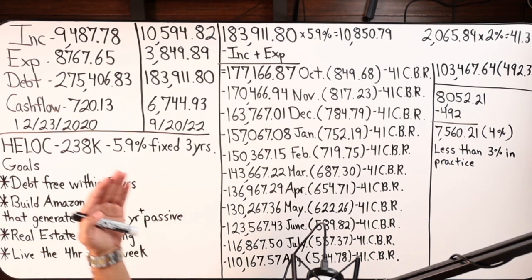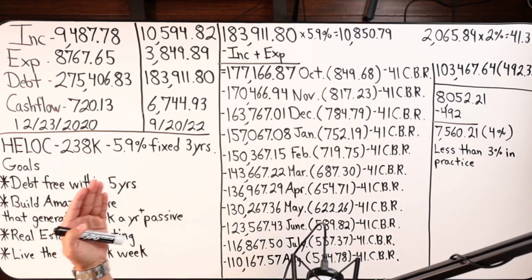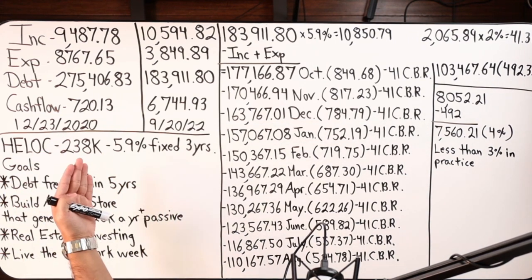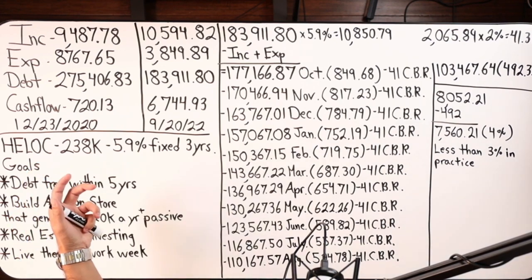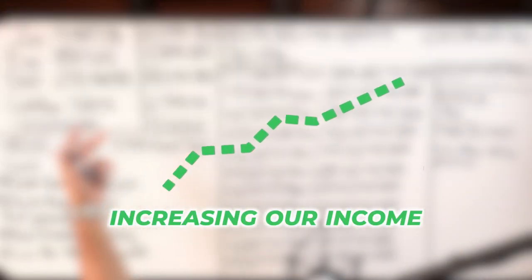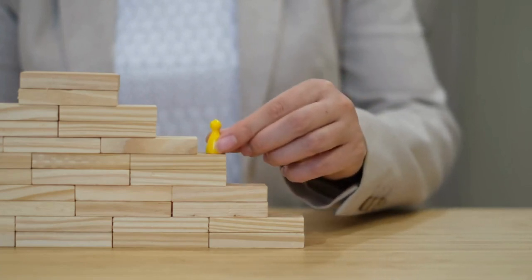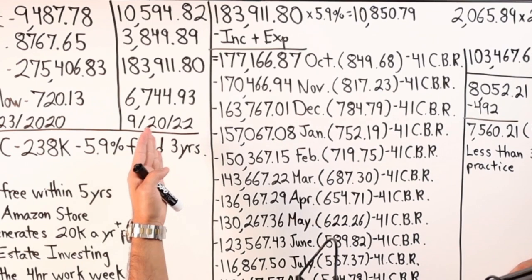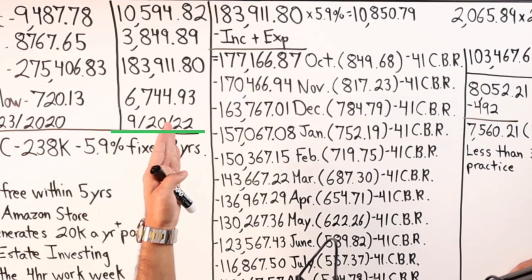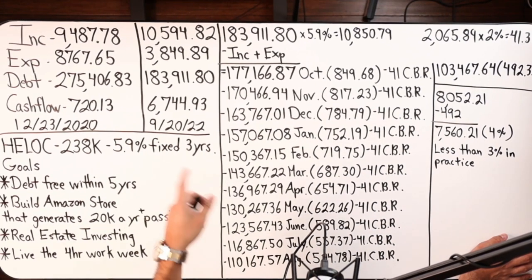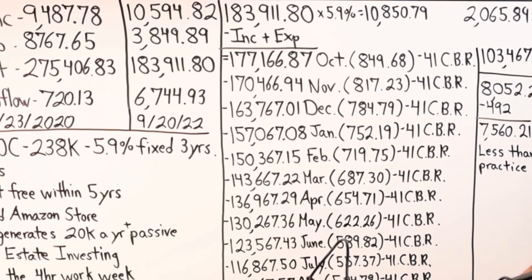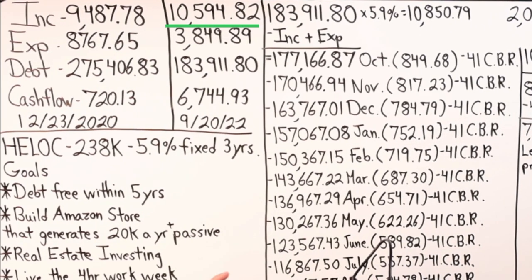Through that period of time we've done a combination of debt snowball, velocity banking with credit cards, personal line of credit, personal capital to eliminate debt, at the same time focusing on increasing our income via promotions and other opportunities in the marketplace. Since then, it's now September 20th of 2022, and I'm recording this video a few days after. Their income is now $10,594.82, expenses have dropped all the way down to $3,849.89.